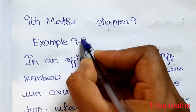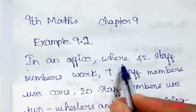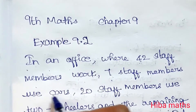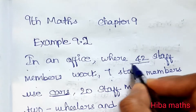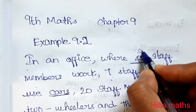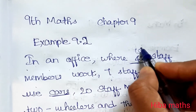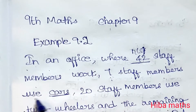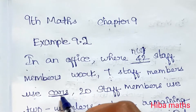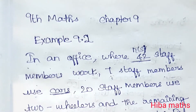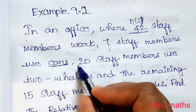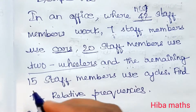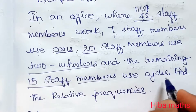Example 9.2: In an office where 42 staff members work, 7 staff members use cars. The first is 42 members. 7 staff members use cars. 20 staff members use 2-wheelers. And the remaining 15 staff members use cycles.